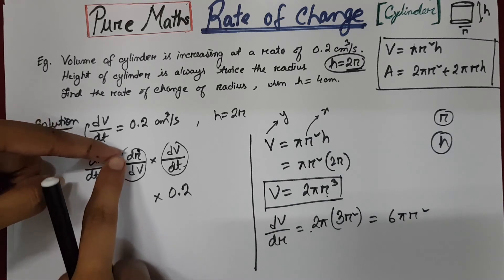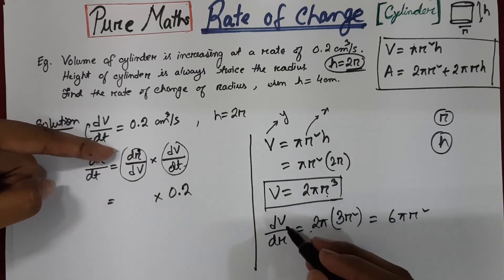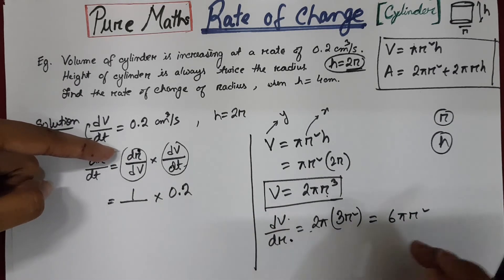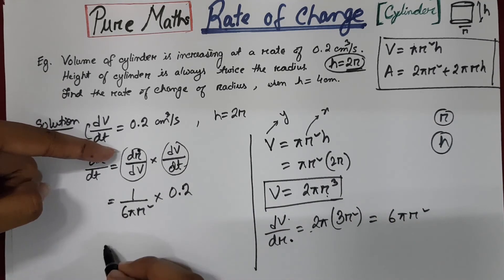But we need dr by dv. That is dv by dr. We cannot take that. We need to take the reciprocal of this one. So 1 over 6 pi r square.